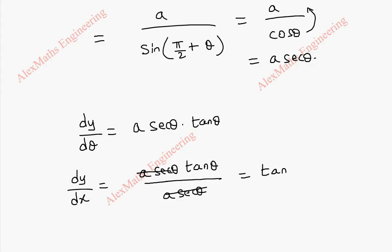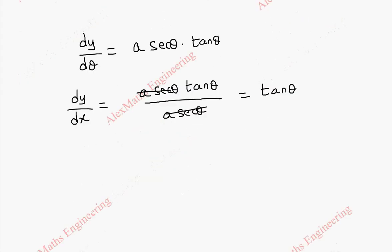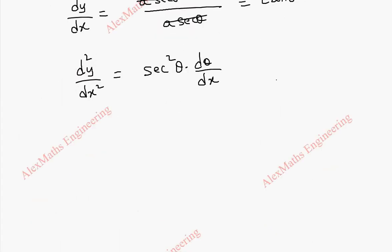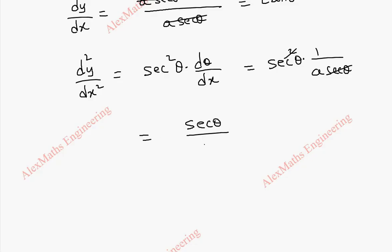The second differentiation d²y/dx² is the differentiation of tan θ, which is secant² θ. But we are doing it with respect to x, so we have to write dθ/dx, which is the reciprocal of dx/dθ. Since dx/dθ is a secant θ, after cancelling we get secant θ by a. So this is our second differentiation d²y/dx².